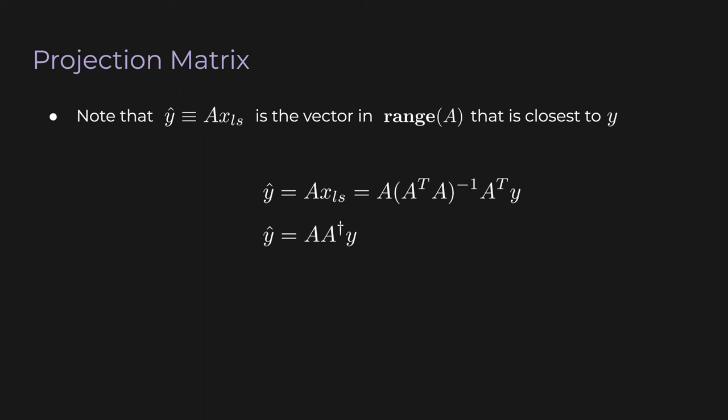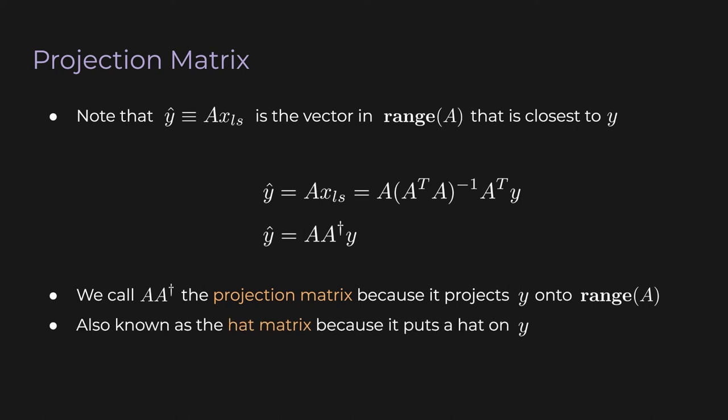So that A, A dagger, that's a matrix. And we call that the projection matrix because it projects y onto the range of A. By the way, this is also known as the hat matrix because it puts a hat on y. So on the right-hand side, we have y that's our input. And we pre multiplied by this A, A dagger. And as the output, we get y hat. So y goes to y hat.